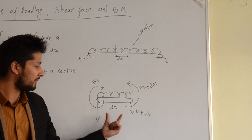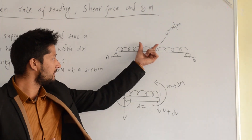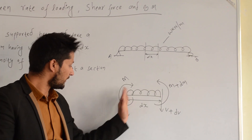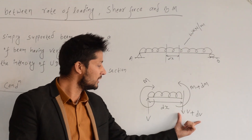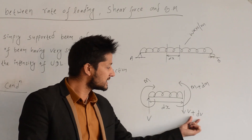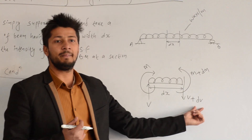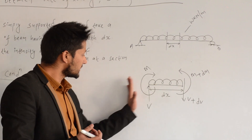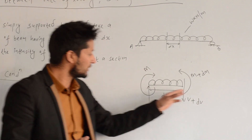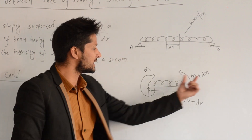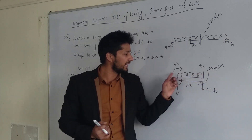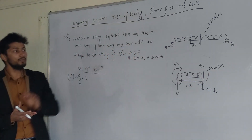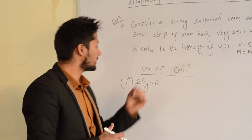Now we note the sign convention: on the left part, the upward side is the clockwise moment — positive. So the positive moment M on the left side; on the right side the anti-clockwise direction gives positive moment M plus dM. The second relation comes from the equilibrium condition.